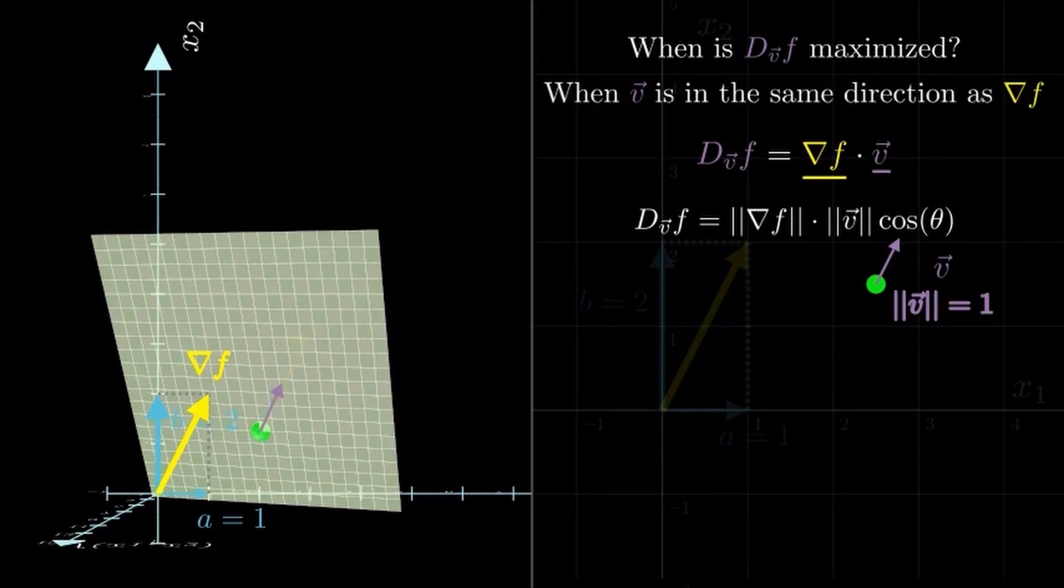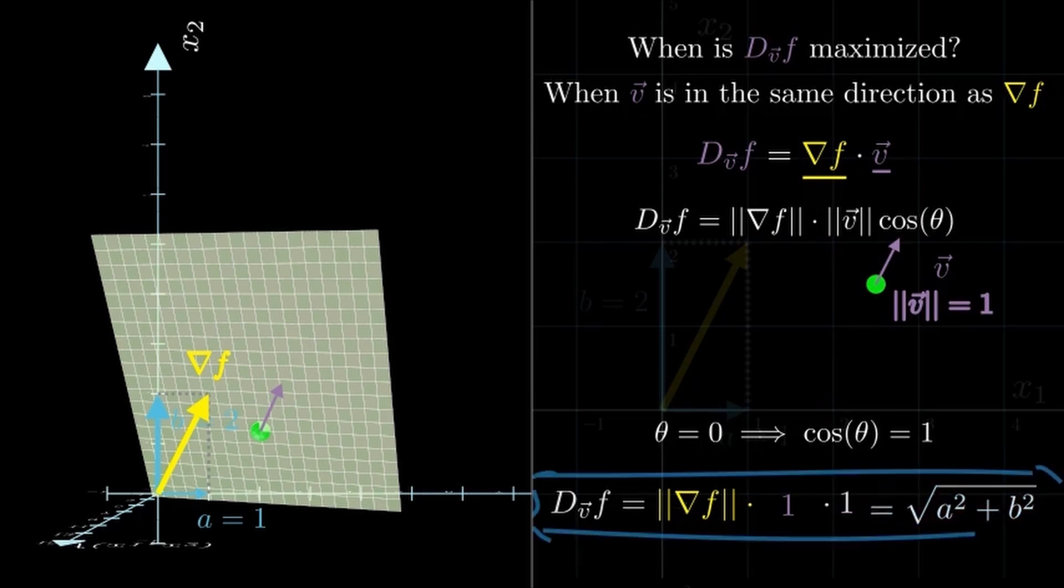And when the two vectors point in the same direction, the angle between them is zero, so cos(θ) = 1. Plugging this into the dot product formula gives us the product of their magnitudes. But since v is a unit vector its magnitude is one, so in this special case the directional derivative just equals the magnitude of the gradient itself.